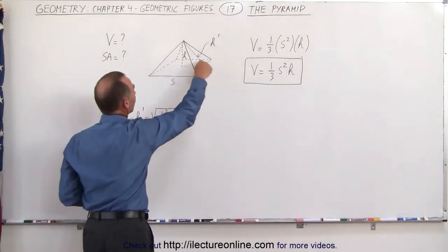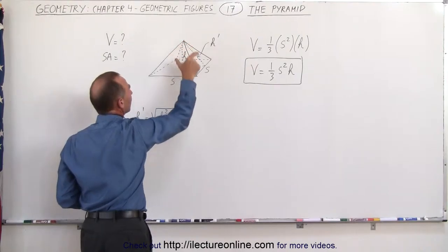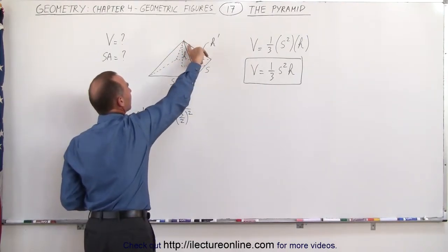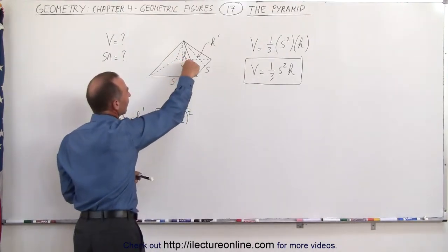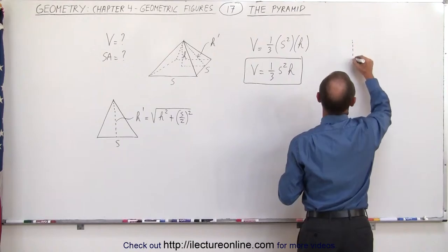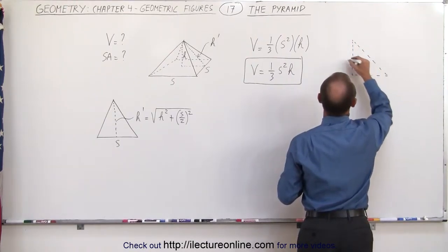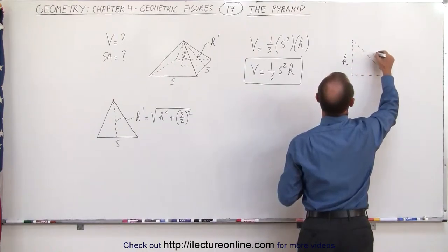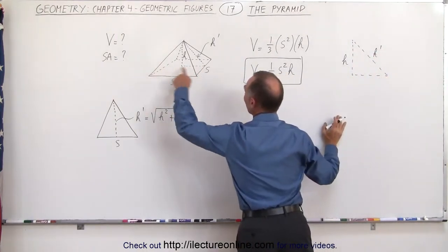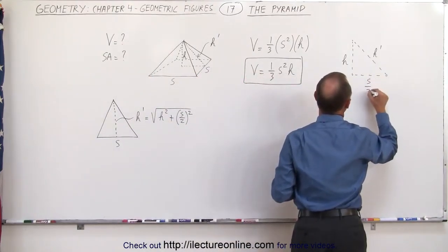If you draw a right triangle here, you can see that this would be the height of the triangle, this would be the bottom of the triangle, and this would be the hypotenuse. So let's take that over here and draw it on the side. Here we have the height, the slanted height, and the base. This would be h, this here would be h prime — which is what we're looking for — and this would be half the length of the side of the base, that would be s over 2.